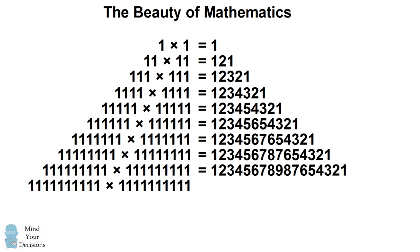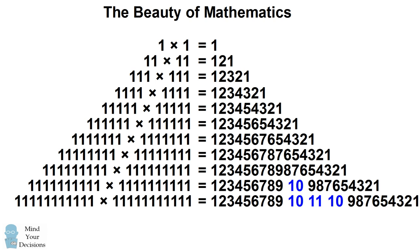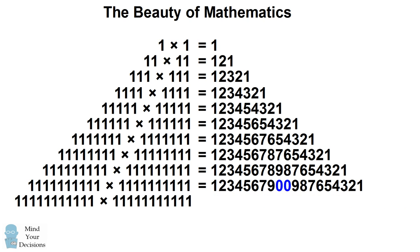But what happens when you have a number which has ten 1's? How would you multiply that by itself? If the pattern continues, you would count up to 10, and then count back down to 1. If you had a number with eleven 1's, you would count up to 11, and then count back down to 1. In this video, I'm going to show you a very real way in which this pattern does continue — you could say this is an accurate representation of the multiplication. But since we write numbers in decimal form, we'll need to carry over whenever we have a result that's more than 10.